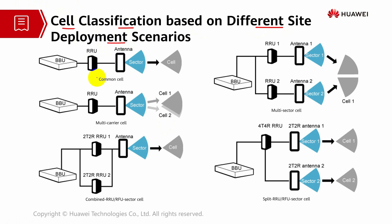Let's go to the first type: common cell. A common cell refers to the cell established in a common sector. This is a common sector served by a single RF processing module, such as one RRU.